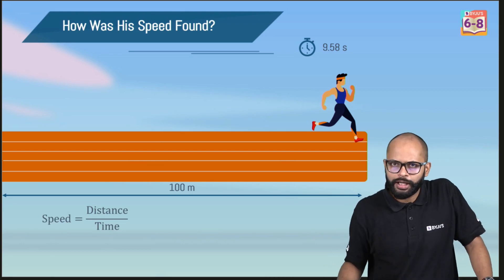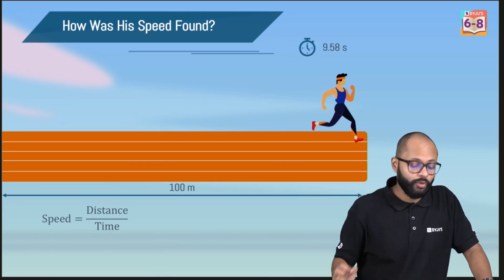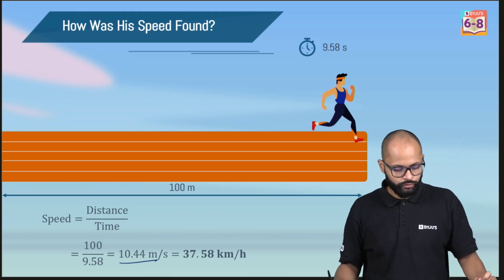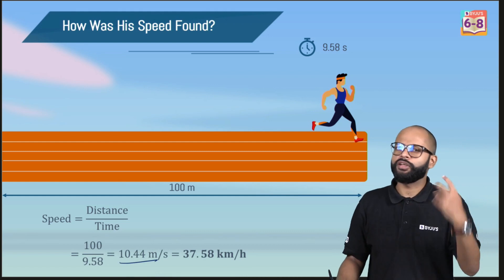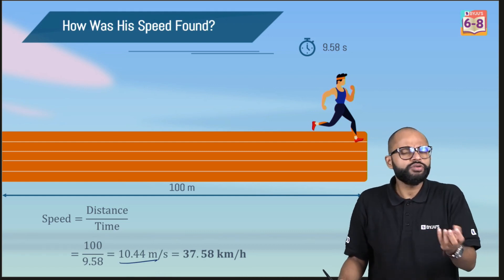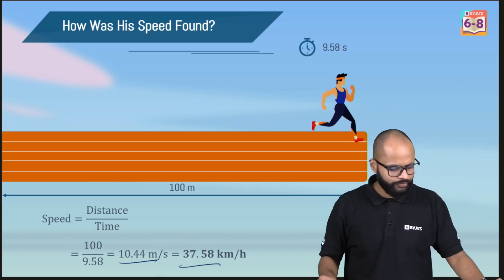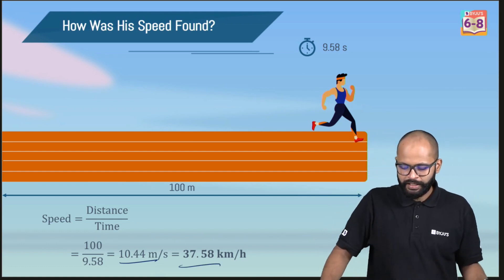What is the speed? Speed is distance upon time. We have a distance as 100 meters, we have a time recorded as 9.58 seconds. When we do the calculation, we get 10.44 meter per second. If we convert it into kilometer per hour, multiply by 18 by 5, you will get 37.58 kilometer per hour.